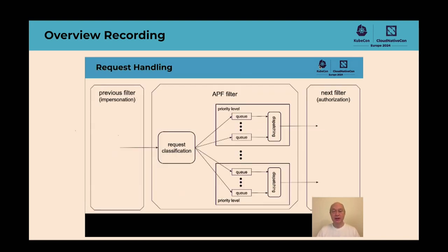Let's look at where the APF feature fits into the API server. We'll think about the chain of handlers — so-called filters — that do general purpose processing of each request on its way into the server. The APF filter starts by doing classification: for each request, this determines the priority level it belongs to and puts the request into one of the queues at that priority level. Each priority level has a configured number of queues and a dispatcher whose job is to take requests from the right queue at the right time and send them on for further processing, keeping the server as busy as requested and allowed, but no more, with some fairness.